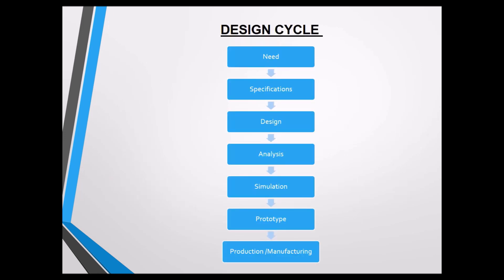Next is the design cycle. The first step is identifying the need of the object — what is the purpose of what we are going to design. Next are specifications, where we give details like length, breadth, height, and materials. Then comes designing the object, which can be done in 2D or 3D view. The analysis step checks whether the design is applicable for the final product, using simulation purposes.